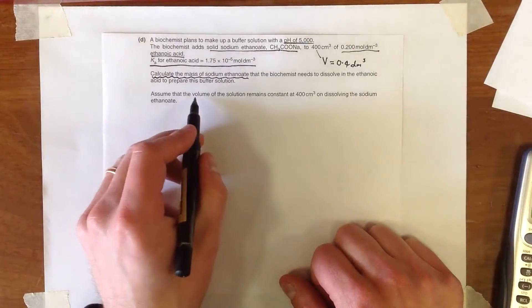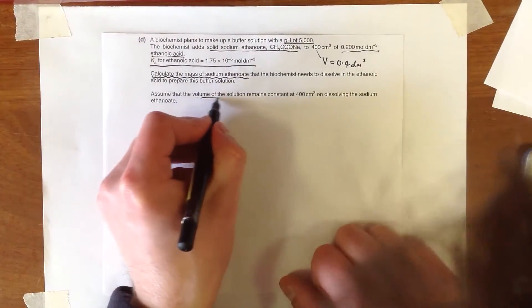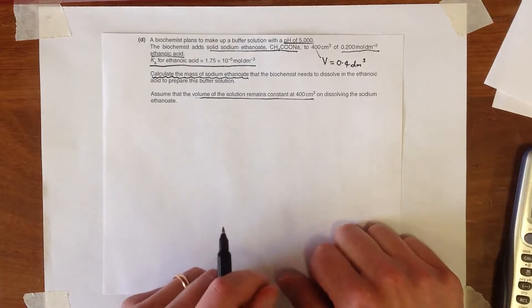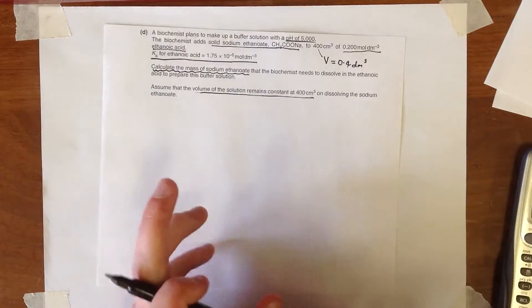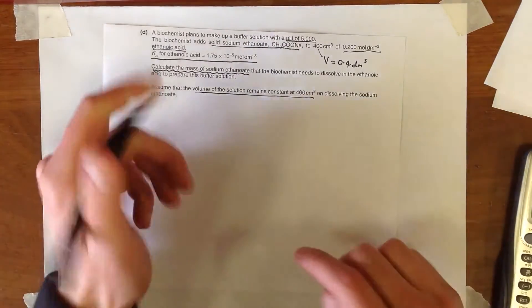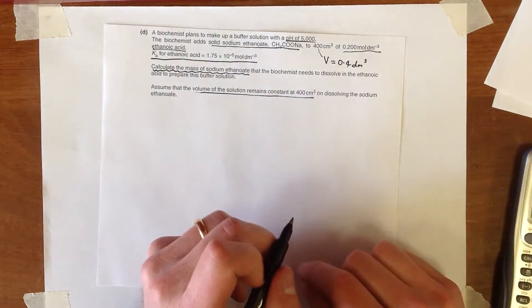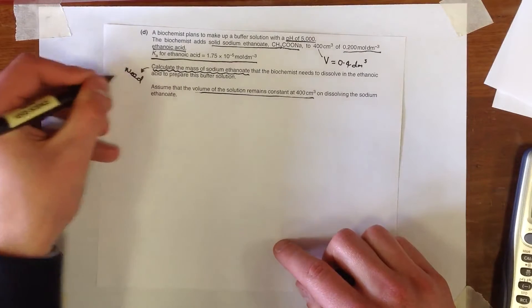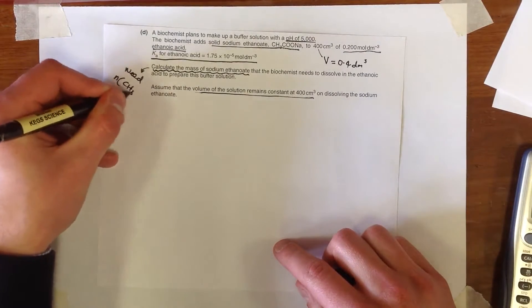And we're going to assume that the volume of the solution remains constant of 400 centimetres cubed on dissolving the sodium ethanoate. So we need to work out what is going on with the ethanoate here, that's our unknown. So we're going to get the mass, so we need the number of moles of the ethanoate.